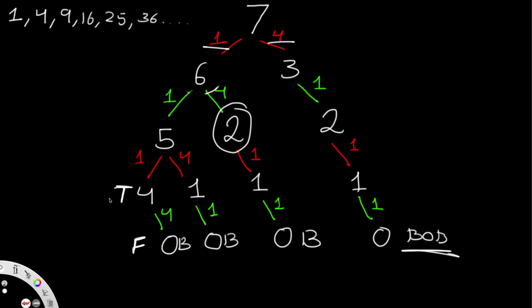Continuing up the tree for n=7: starting from false, true, false, true — and since both 6 and 3 both have a value of true, going up to 7 takes the opposite, giving false. That makes sense: false means Alice is not winning, which is exactly what's happening for n=7.